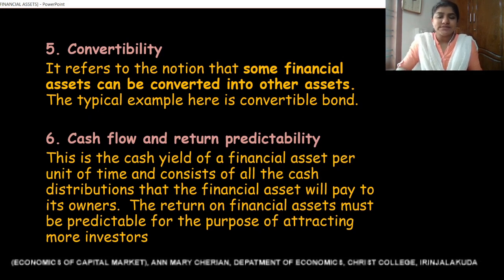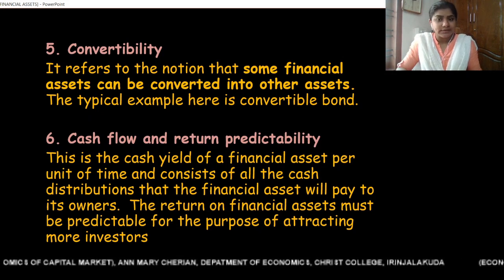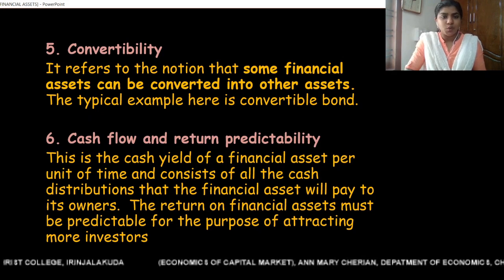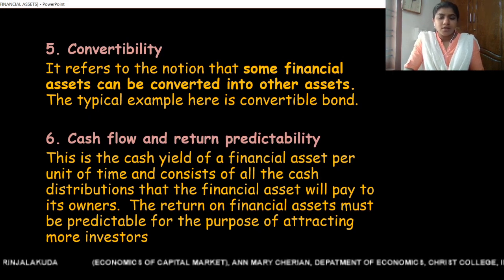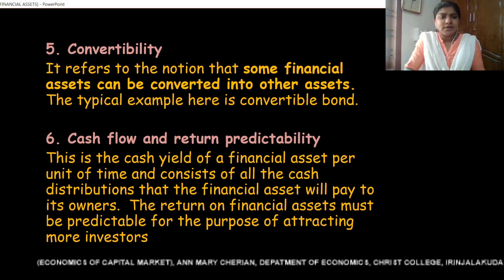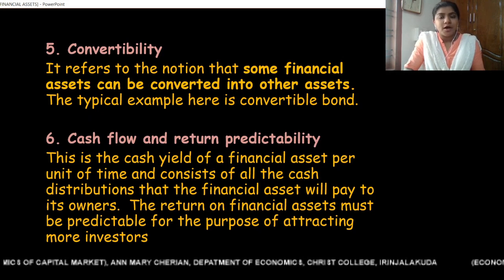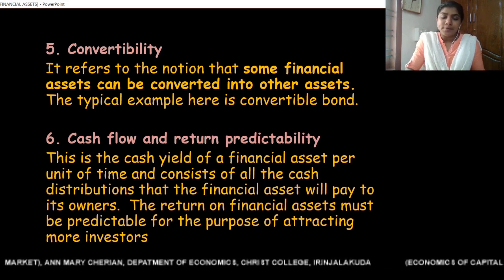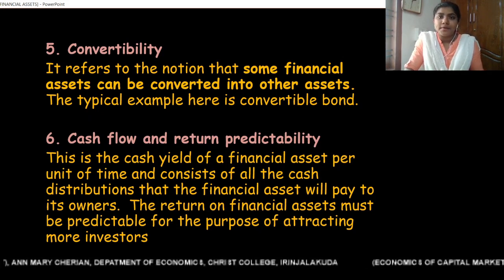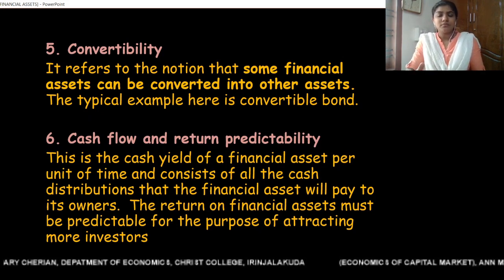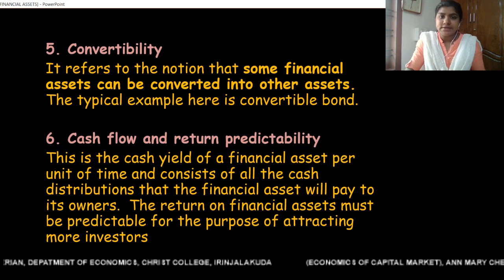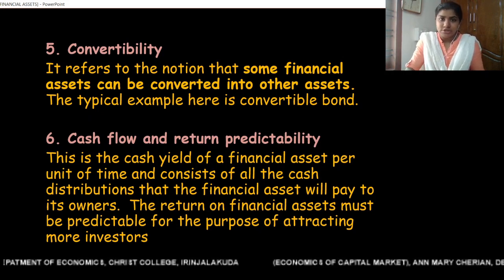The sixth property is cash flow and return predictability. Cash flow is the cash yield of a financial asset per unit of time. The owner of a financial asset can predict the cash flow or return on that particular asset. For example, a bond holder or a deposit holder knows the rate of interest and can predict the cash flow or return per year.